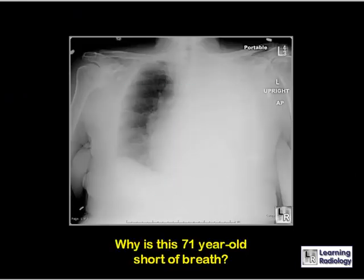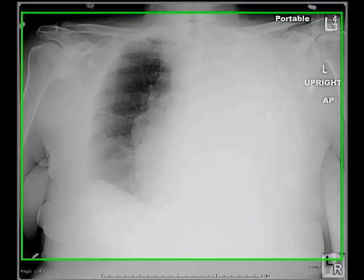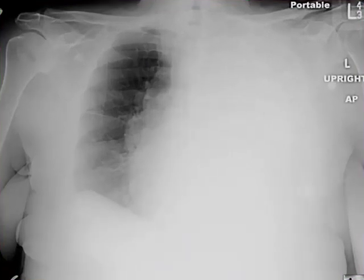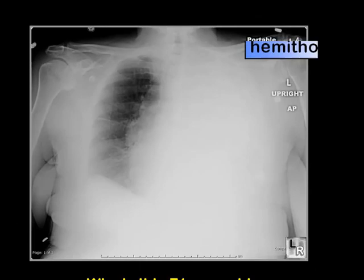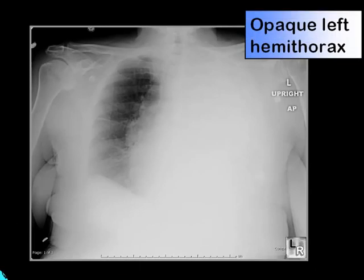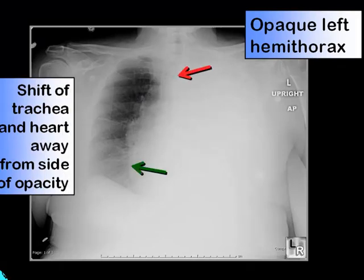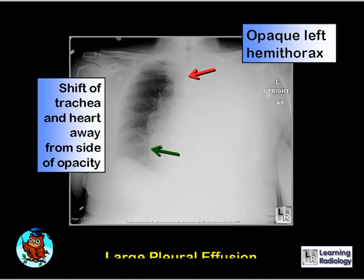Why is this 71-year-old short of breath? There is an opacified left hemithorax with a shift of the trachea and the heart away from the side of opacification, indicating something is occupying space on the left — this is indicative of a large left pleural effusion. In this case it was due to an underlying bronchogenic carcinoma.